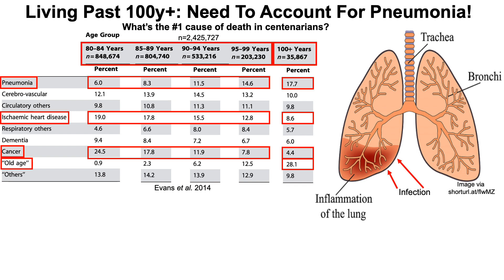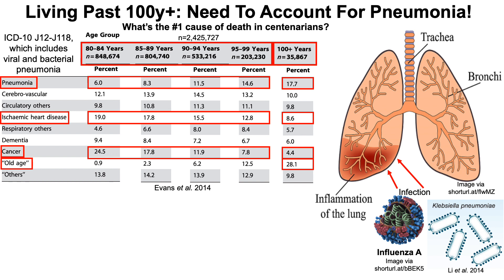So what is pneumonia? It's simply an infection of the lung or lungs, which leads to inflammation, difficulty breathing, and all the complications that come with that. In this study, pneumonia was designated with the ICD-10 codes J12 through J18, which includes both viral and bacterial pneumonia. In today's video, I'm going to talk about strategies to optimize against viral pneumonia caused by the influenza A virus, and bacterial pneumonia caused by Klebsiella pneumoniae bacteria.